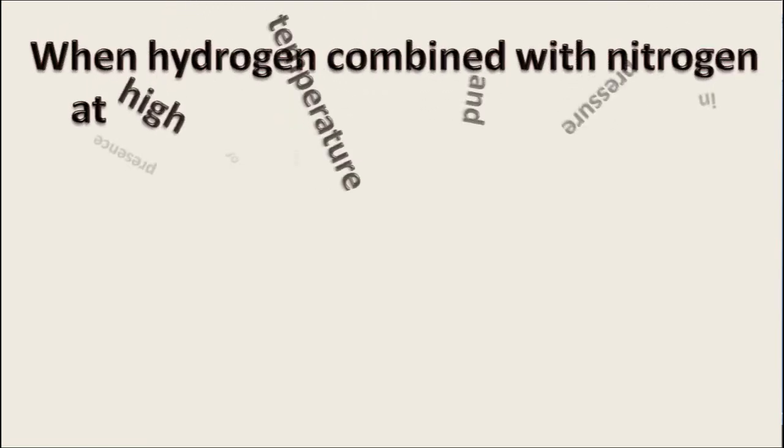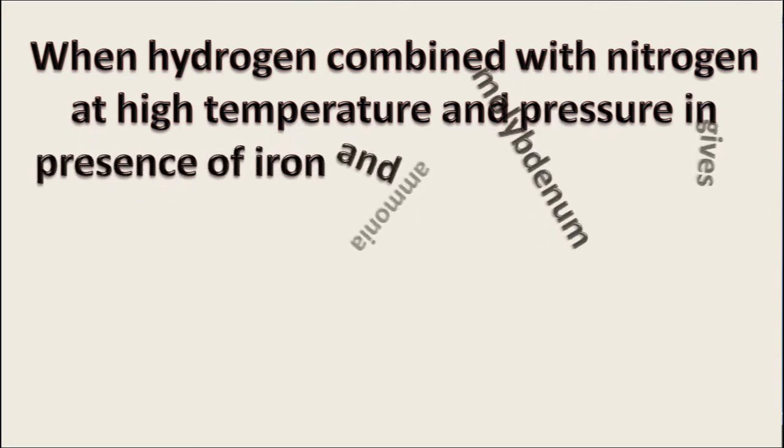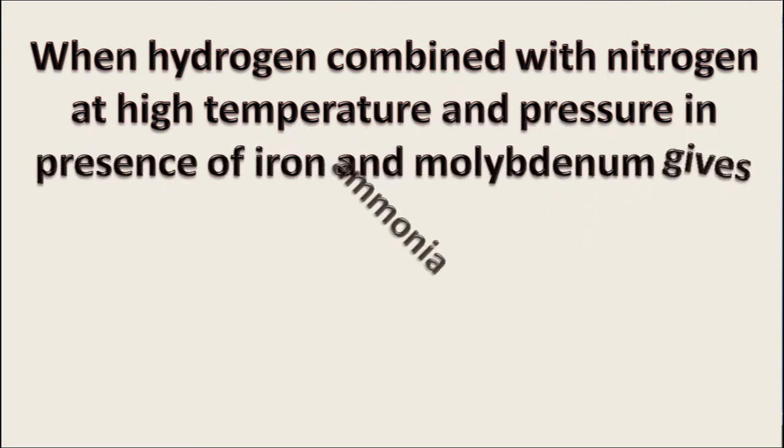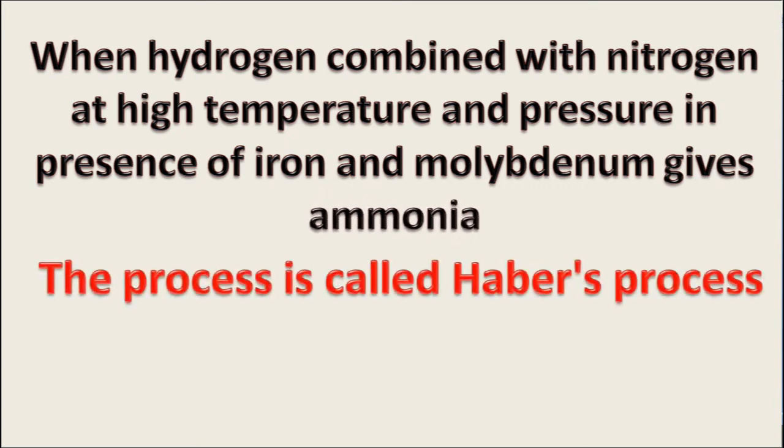Chemical properties of hydrogen: When hydrogen combines with nitrogen at high temperature and pressure in presence of iron and molybdenum catalysts, it gives ammonia. This process is called Haber process. Nitrogen and hydrogen in the ratio 1 is to 3 combine to give ammonia molecule.